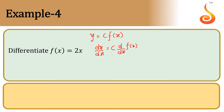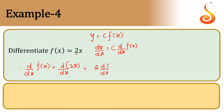In this question, the constant is 2. Therefore, d/dx of f(x) is equal to d/dx of 2x, where 2 is a constant that comes out. So we get 2 into d/dx of x.